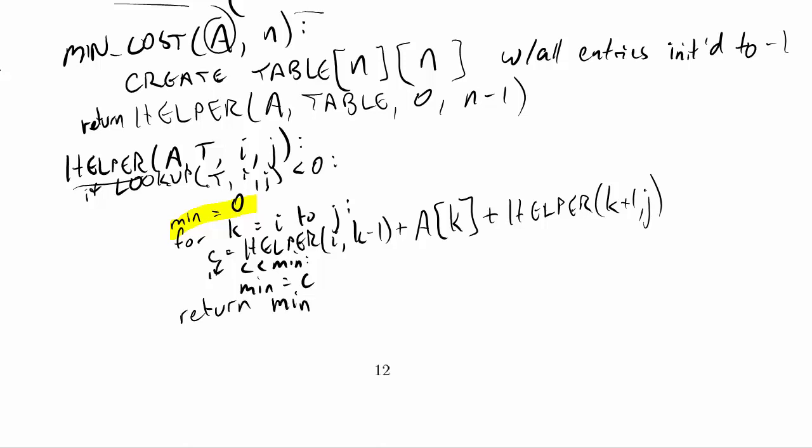It should have said return min right down here. But instead of returning minimum, what I want to do is store it in the table. I want to make sure that I use my table and I also want to make sure that I update my table anytime I do computational work. So where does that go in the table? Well table entry i, j should get the value minimum.